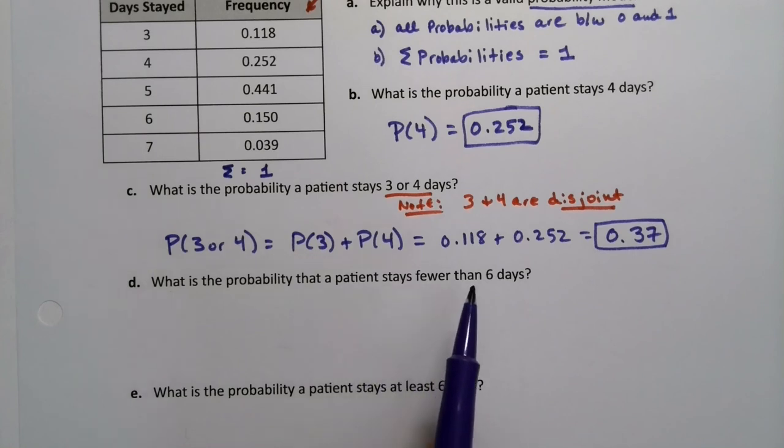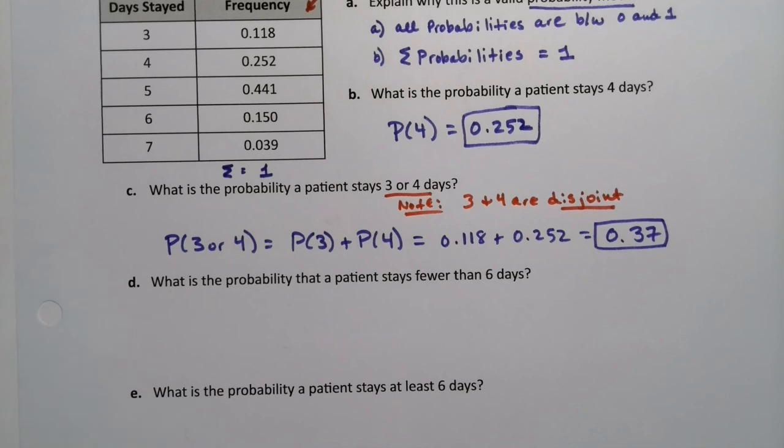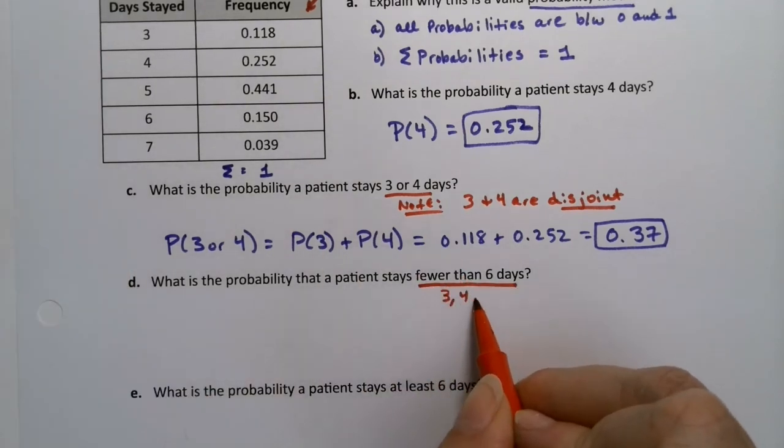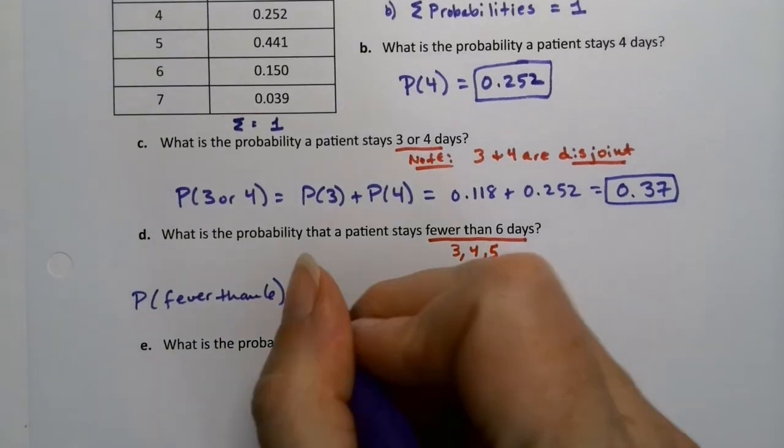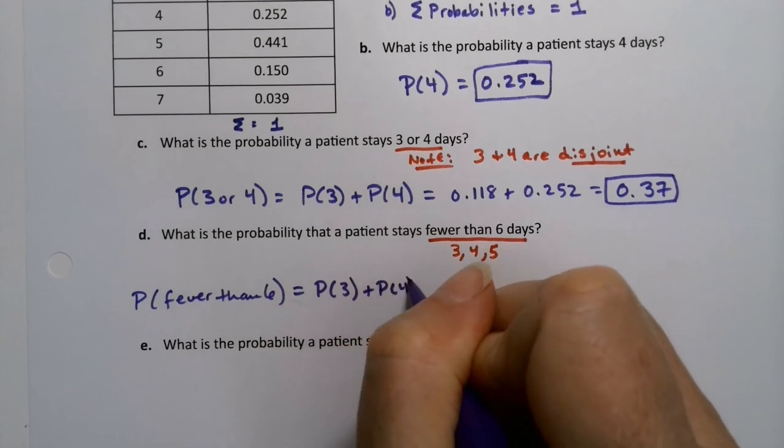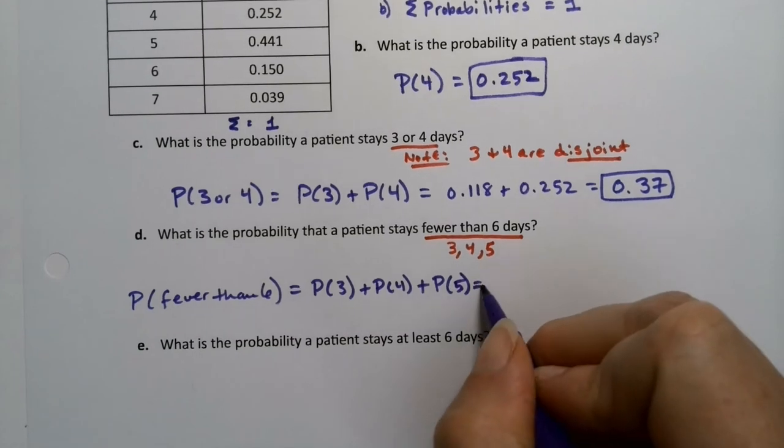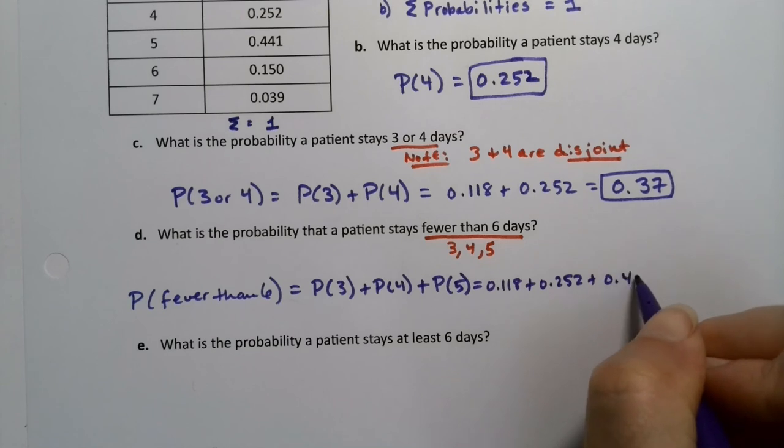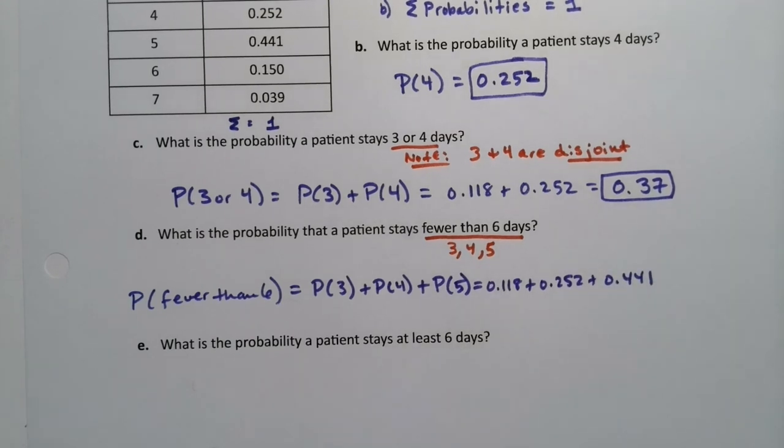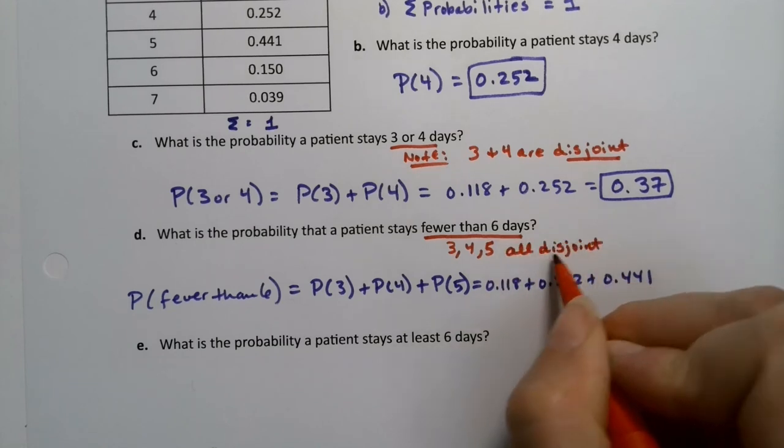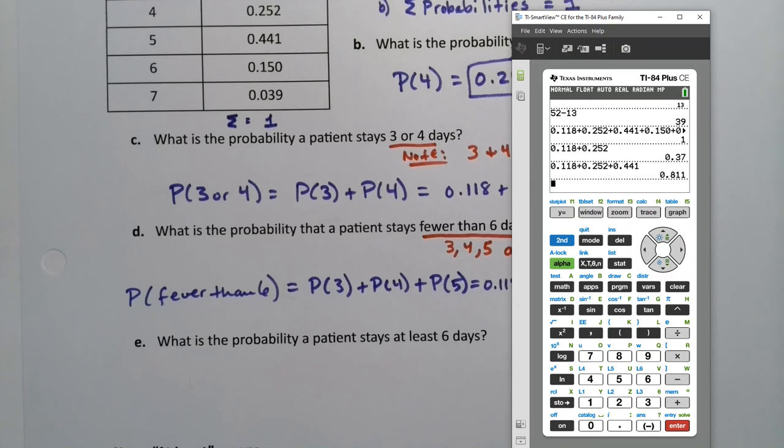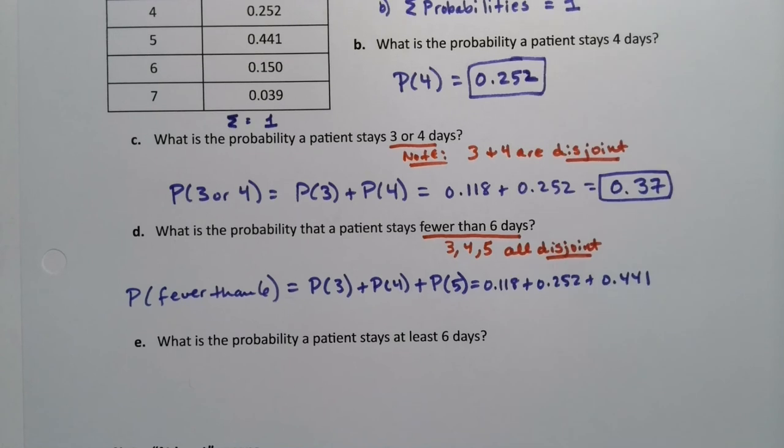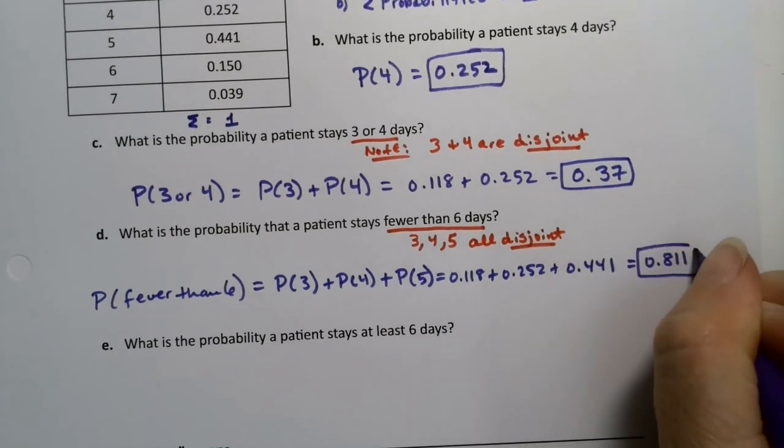What's the probability that a patient stays fewer than 6 days? Fewer than 6 would be 3, 4, or 5. When they want the probability of fewer than 6, 6 does not count. So that would be the probability of 3 plus the probability of 4 plus the probability of 5. We would just add them up because they're all disjoint. So it's 0.118 plus 0.252 plus 0.441. Grab a calculator: 0.118 plus 0.252 plus 0.441, and we get 0.811.